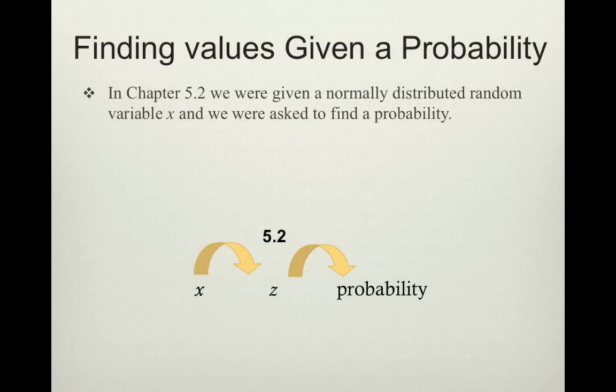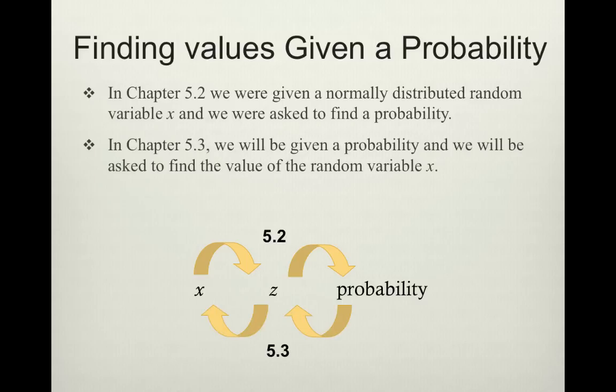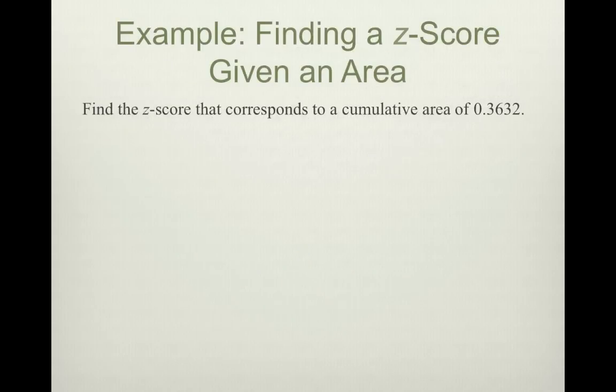Remember last week we used something called norm.s.dist and norm.dist in Excel, and we would put in either a z-score in true or we would put in an x-value, a mean, and a standard deviation in true, and Excel would give us a probability or an area. Now what we want to do is we want to be given a probability and sometimes a percentile, and we're going to be asked to find the random variable x. So maybe given a probability and working backwards to get, say, an IQ score or working backwards to get a height.